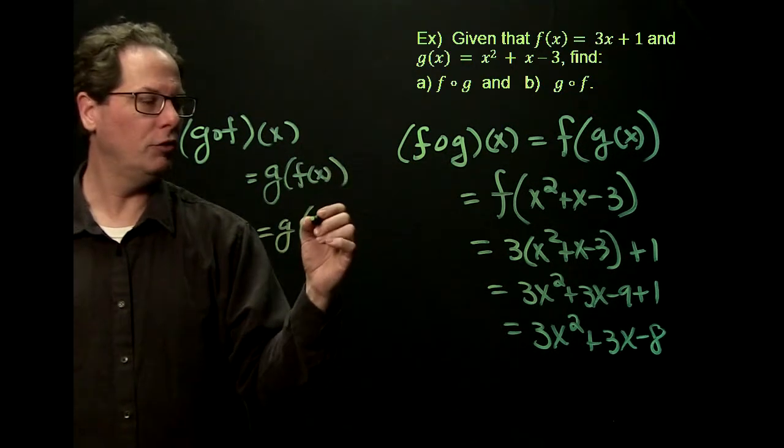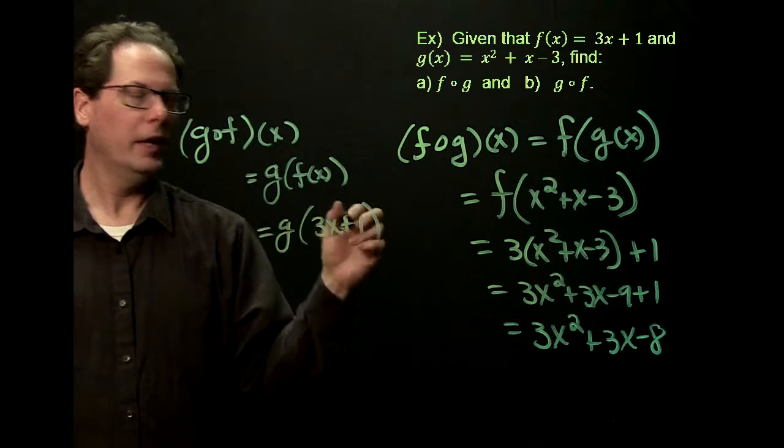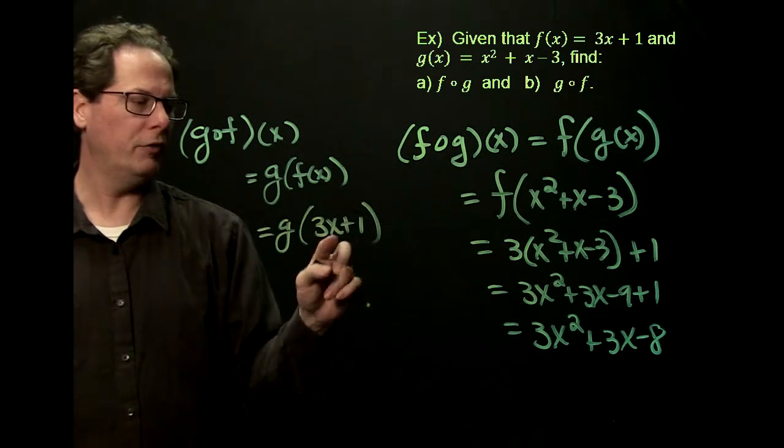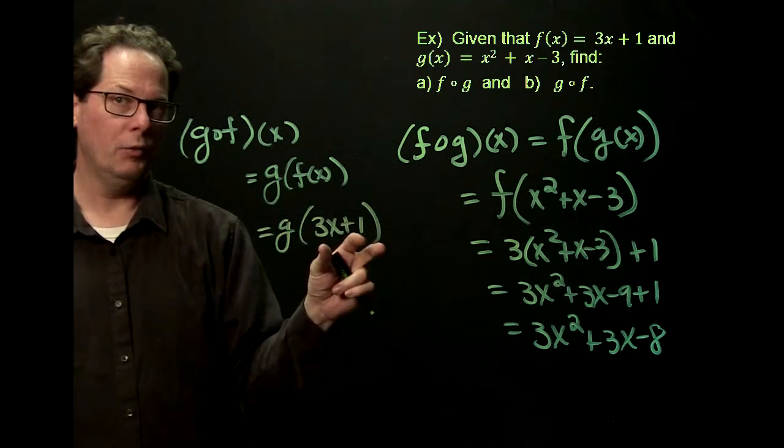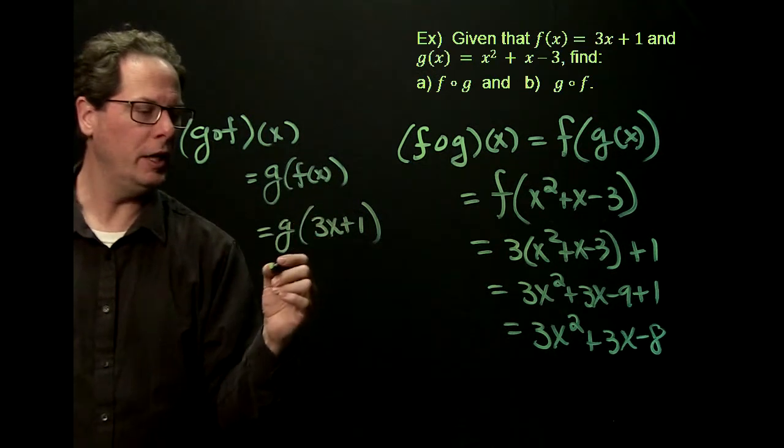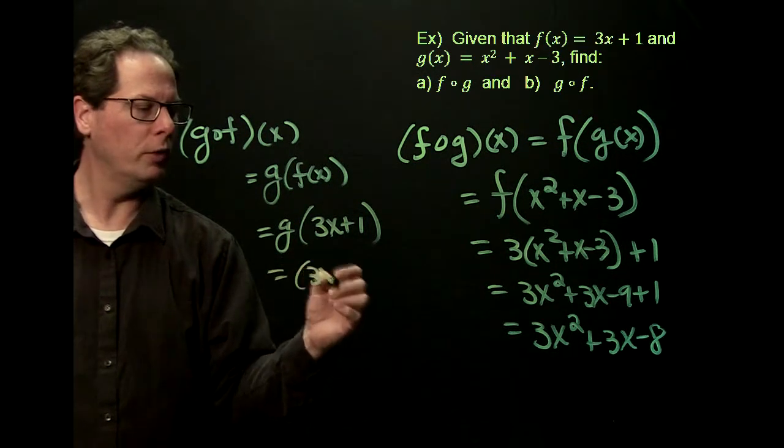So f acts on x, it takes you to 3x plus 1, and so this is the output of f for a given input x. We take that whole thing, and we plug it into g. So g takes a number, 3x plus 1.